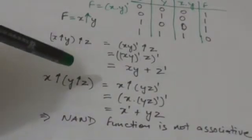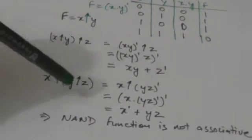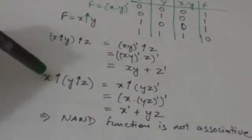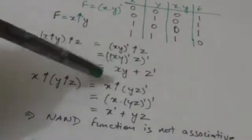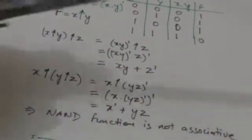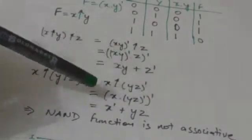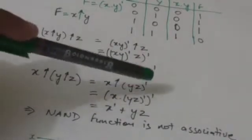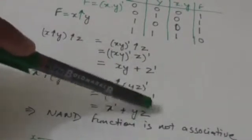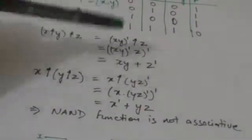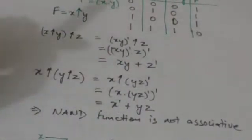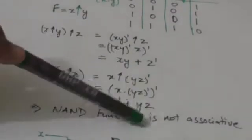Now here, we first NAND Y and Z, and then NAND the result of Y and Z with binary variable X. The result of Y NAND Z is the complement of Y·Z. Now it is to be NANDed with binary variable X, so it would become the complement of X and (complement of Y·Z). By De Morgan's theorem it would be equal to X complement plus Y·Z. These two results are not equal, which means the NAND function is not associative.